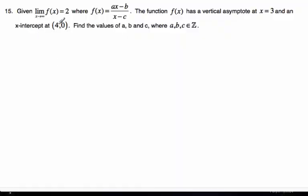Okay, so in this question we're given this function, a rational function, with a x minus b over x minus c, and we're given various information to find a, b, and c.